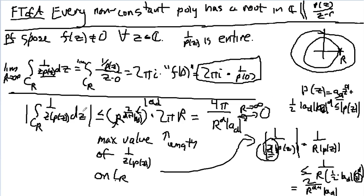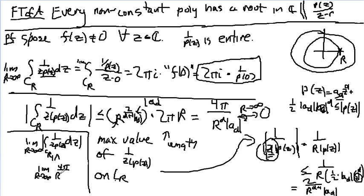So, in other words, this integral, the limit of, as r goes to infinity, of c of r, circle of radius r, 1 over p of z, dz, if I take the modulus of it, that's less than or equal to the limit as r goes to infinity of 4 pi over r to the d times a constant, just that coefficient, which equals 0.